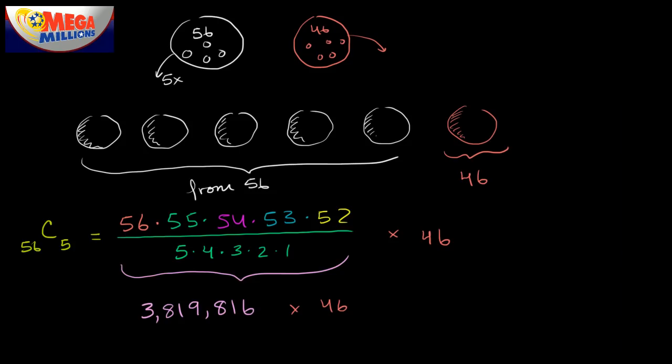So that is, let me write that number down. So that gives us 175,711,536. So your odds of winning it with one entry, because this is the number of possibilities, and you are essentially for a dollar getting one of those possibilities, your odds of winning is going to be one over this.